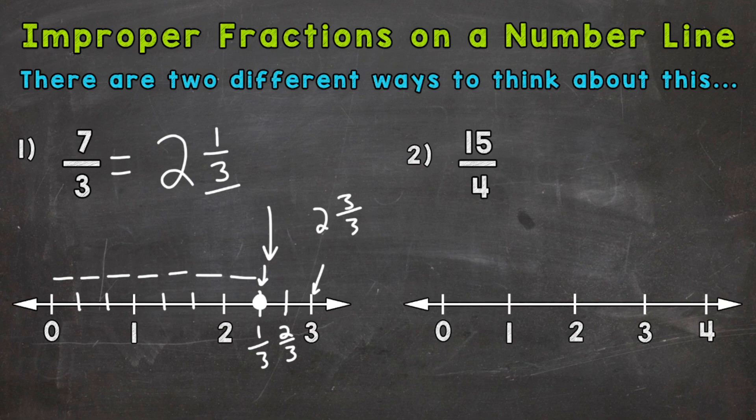So on to number two, where we have 15 fourths. And the first thing we want to do is convert to a mixed number. So how many whole groups of four out of 15? Well, three. That gives us a remainder of three. And we keep our denominator of four the same. So three and three fourths.